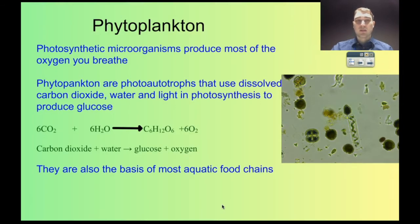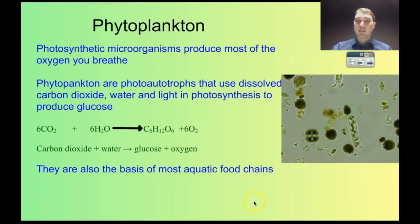Phytoplankton are ridiculously important to life on Earth. They're producing most of the oxygen that you're breathing right now. Phytoplankton floating around the Pacific Ocean produce about 70% of all the oxygen you breathe. Phytoplankton are photoautotrophs — very small microorganisms that can photosynthesise. They take in carbon dioxide dissolved in the water, water from the water, and light shining on the water, and use that to do photosynthesis, turning carbon dioxide and water into glucose and oxygen. They're at the basis of most of the aquatic food chain.